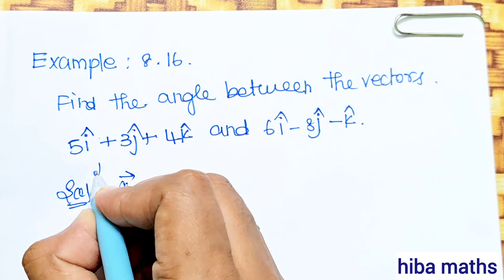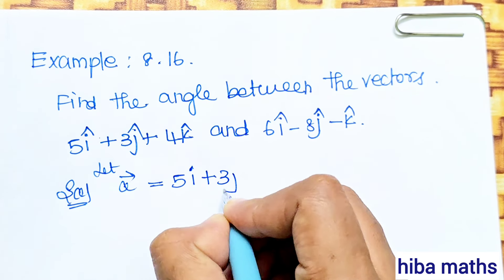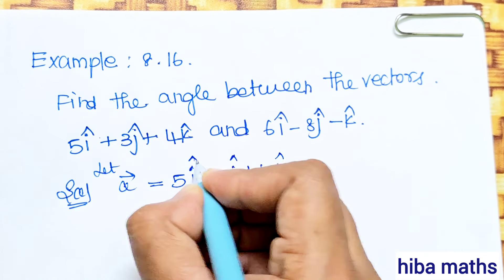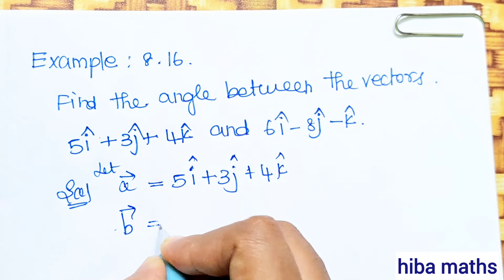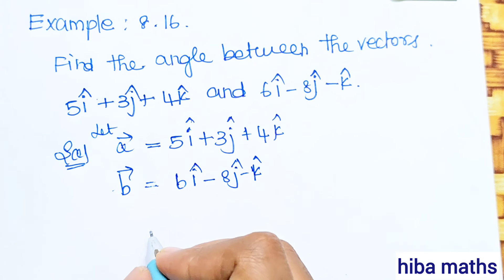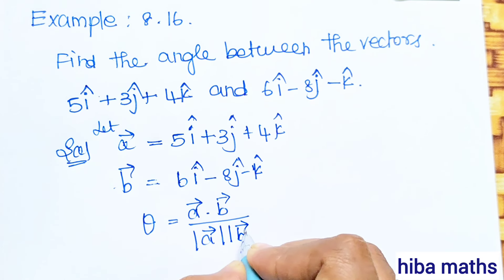In the solution, first, a vector is equal to 5i plus 3j plus 4k. You can choose b vector. The formula uses a vector and b vector. The value of the angle between the vectors: theta is equal to a dot b divided by modulus of a vector into modulus of b vector.